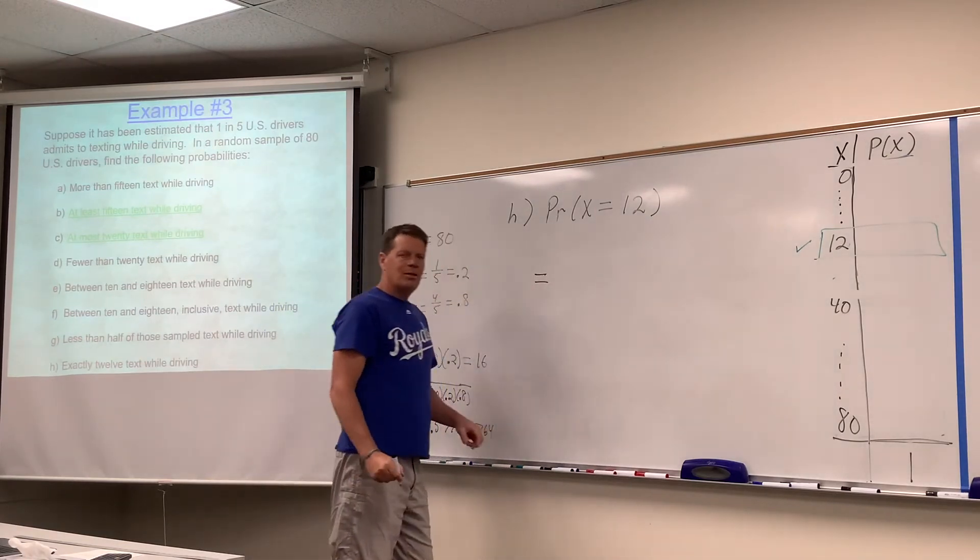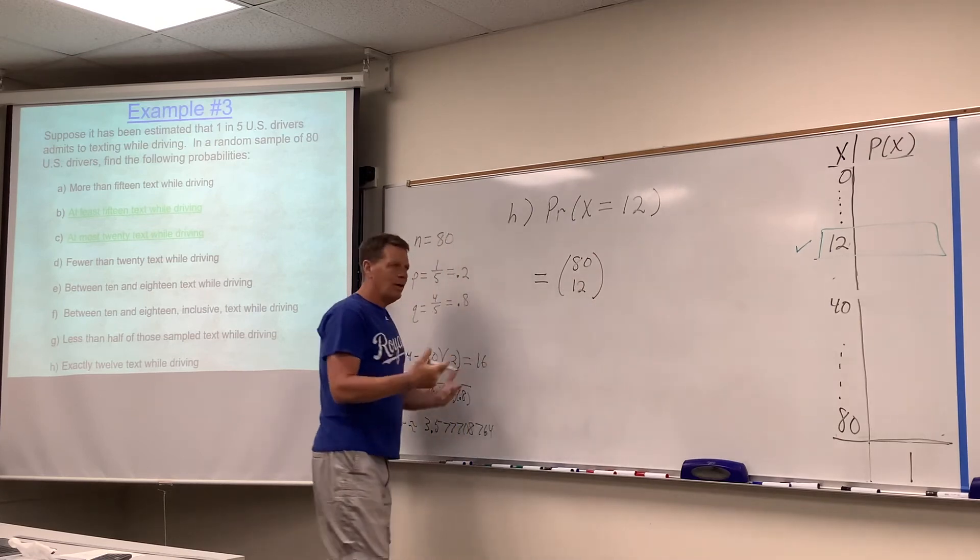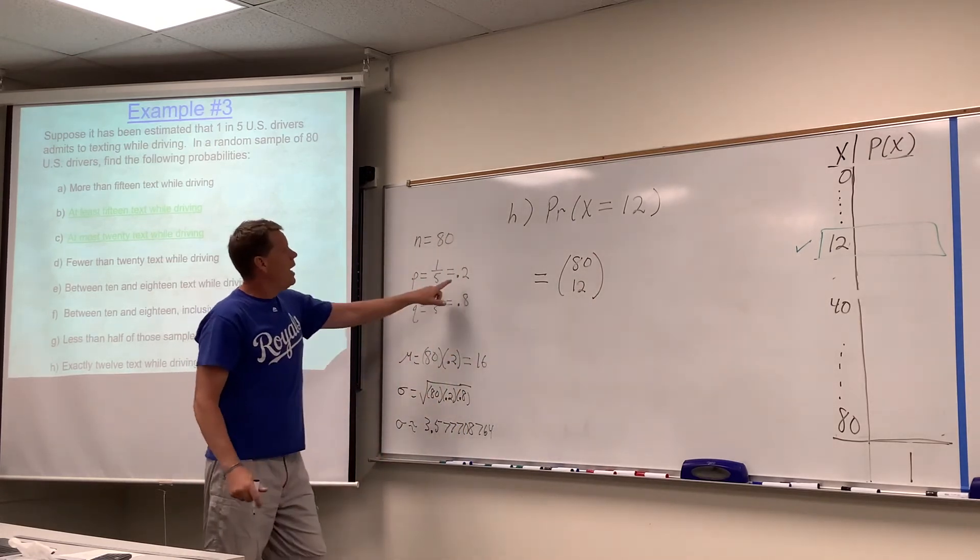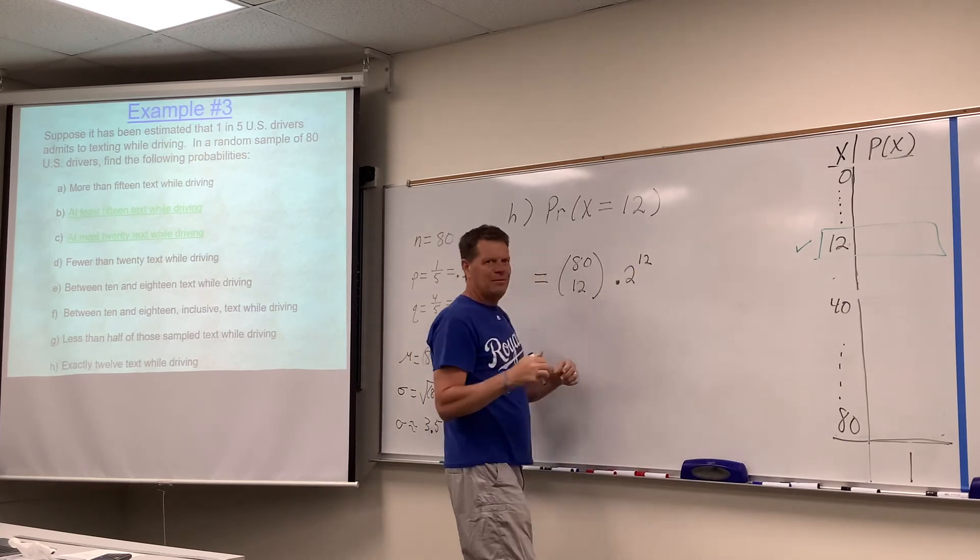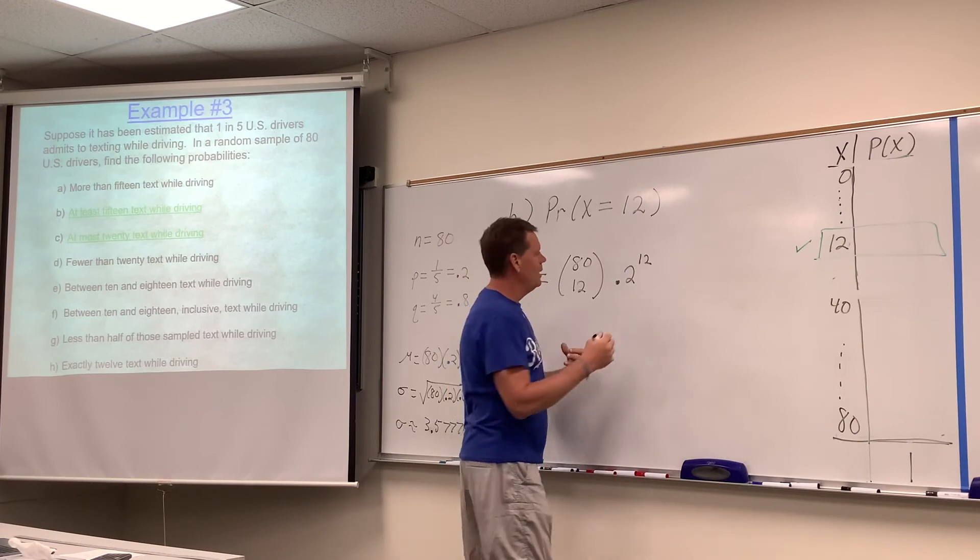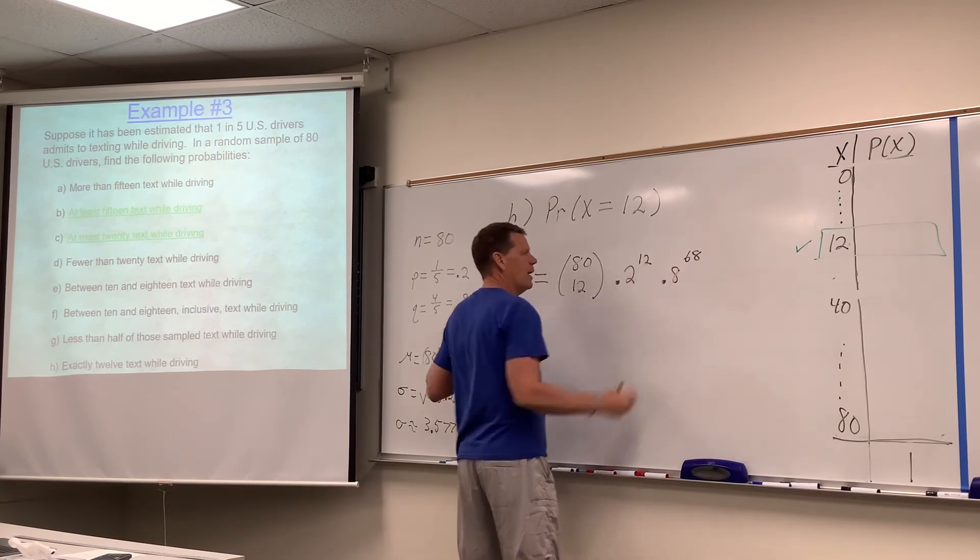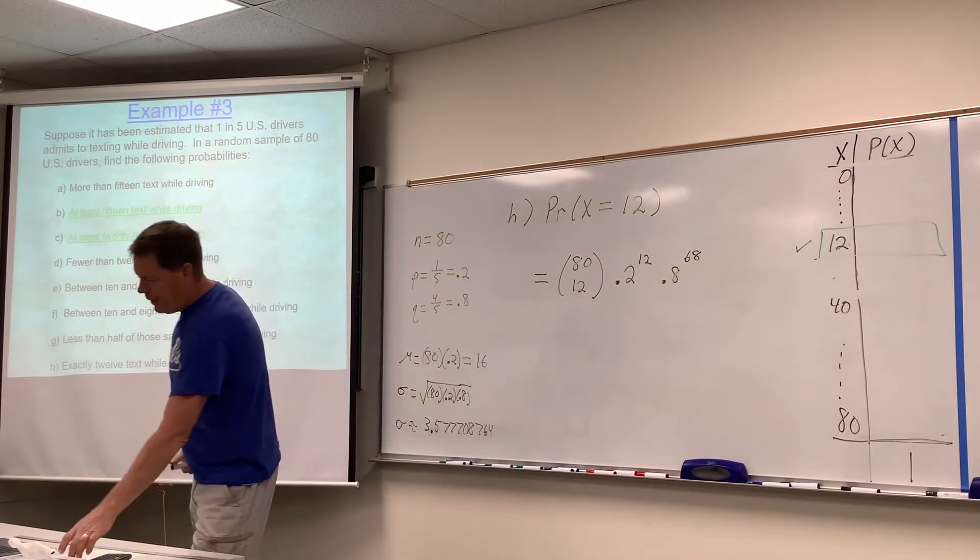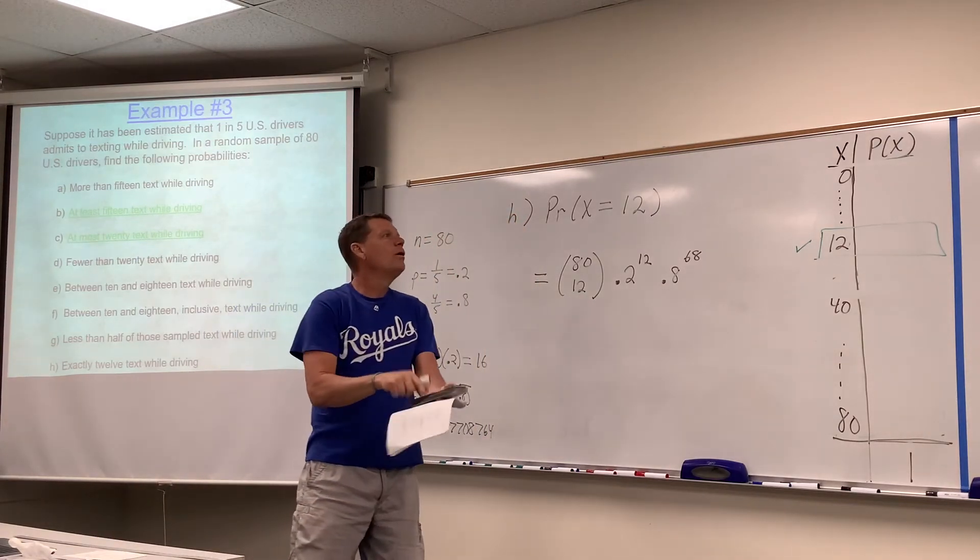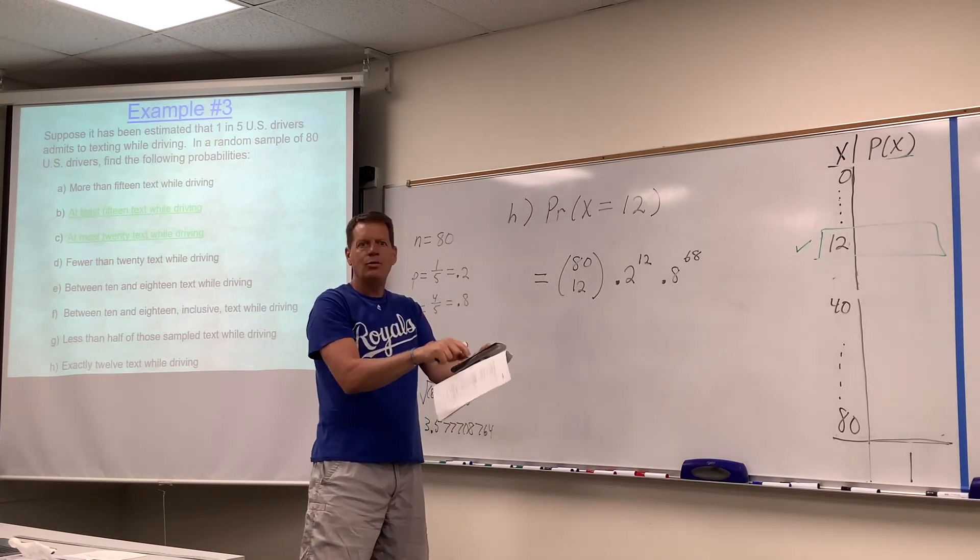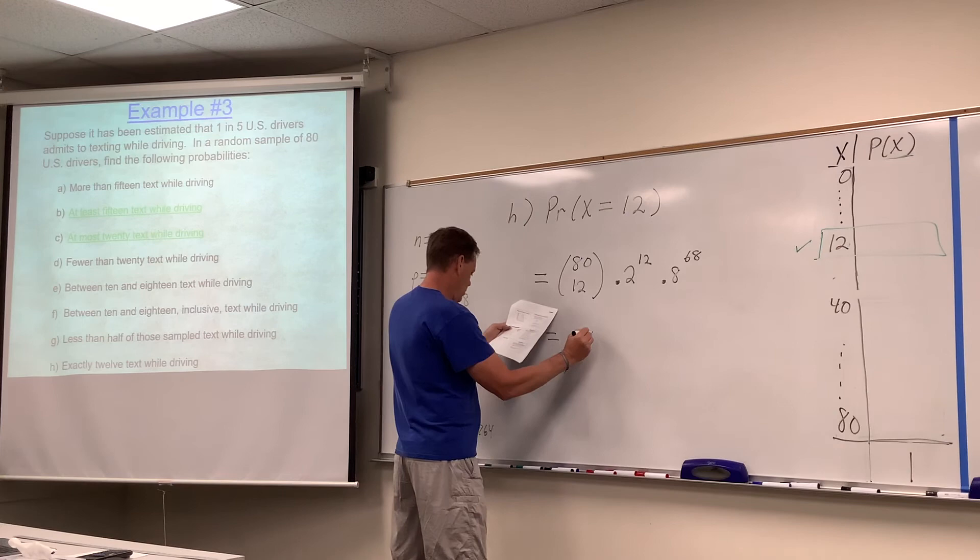How did we do it back on assignment 12? I'm going to give you 80 people, you can choose any 12 to text while driving. Then 0.2 for text while driving raised to the 12th power for 12 successes. And 0.8 failure - if 12 of them text and we're surveying 80, the other 68 do not. Then combination, C(80,12), times 0.2 raised to the 12th power. Push buttons. That number comes out to be 0.0634.